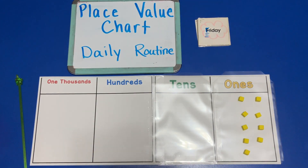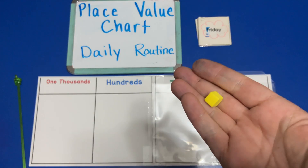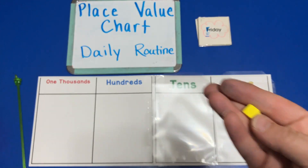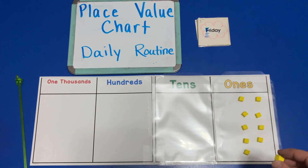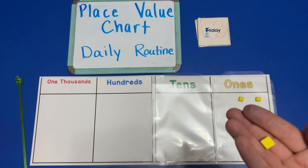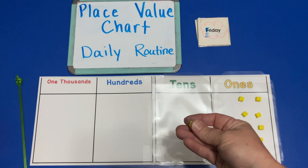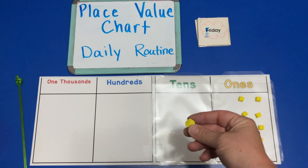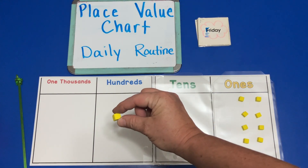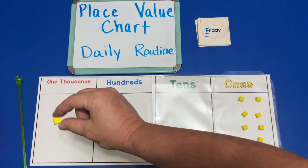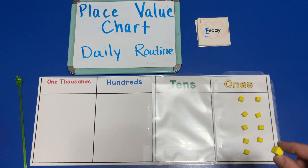So what are we going to do with this one unit today? We can't put it in the ones place, and it's a one, so it can't go in the tens. Can't go in the hundreds. Can't go in the thousands. So where are we going to put this one unit?